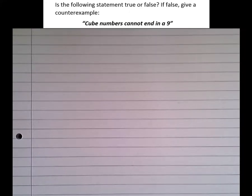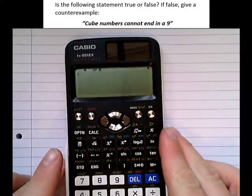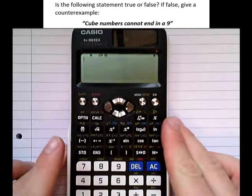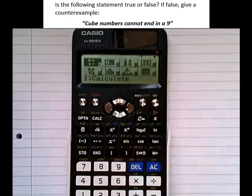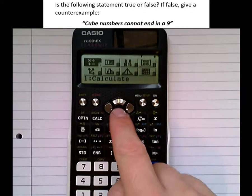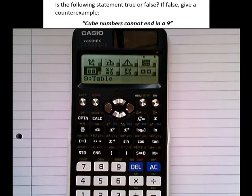The way we can make this easier is by using the table function on our calculator. So there it is. What I want you to do is press menu, then scroll down to the table function which is option 9. Press equals to enter into that.